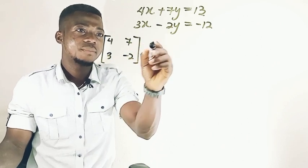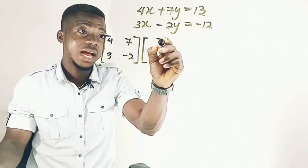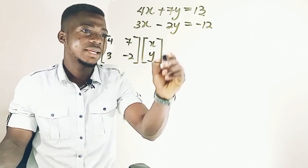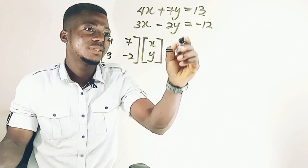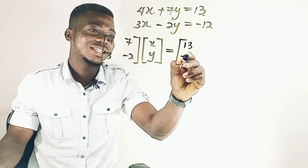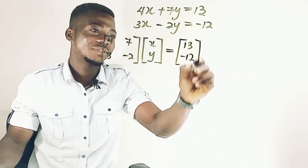Then we come to the values of x, the unknowns. That is x, y, equal to, we have here to be 13, here to be minus 12.